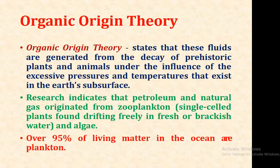Many researchers indicate that petroleum and natural gas originated from zooplankton — plants and organisms found drifting freely in fresh or brackish water — and algae. Zooplankton includes mainly foraminifers and ostracods. Over 95 percent of living matter in the ocean is plankton.